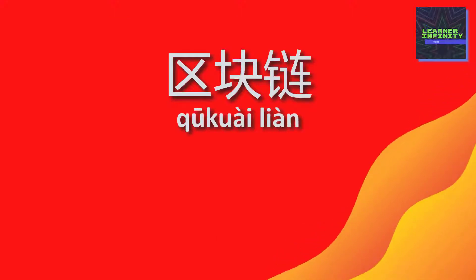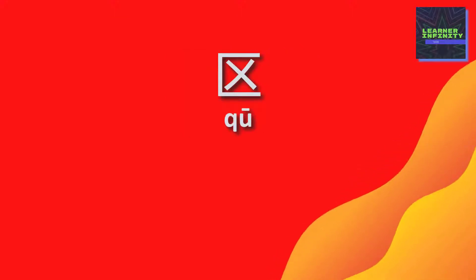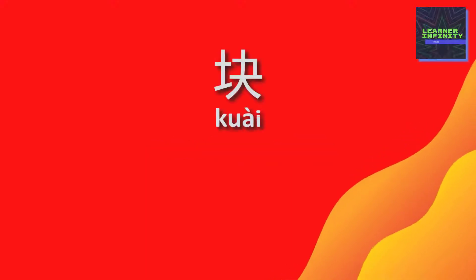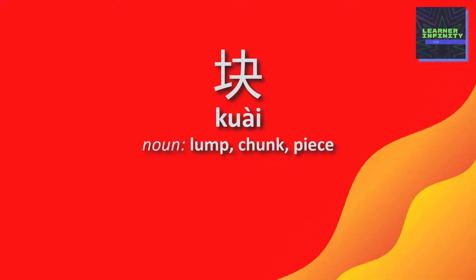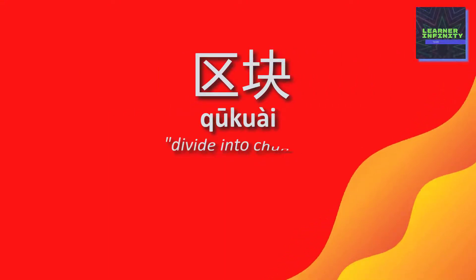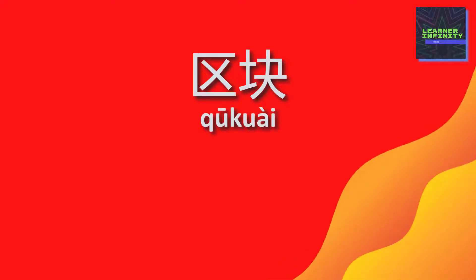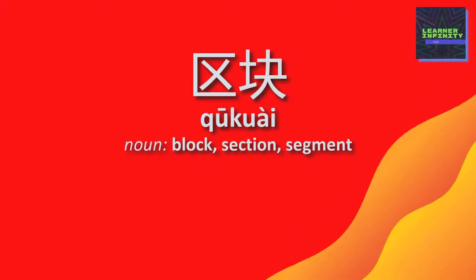First is 区块链. 区 is a verb which means to subdivide or classify. 区 is also a noun which means lump, chunk, or piece. Combining these Chinese characters literally means 'divide into chunks.' Can you guess what 区块 means? It is a noun which means block, section, or segment.